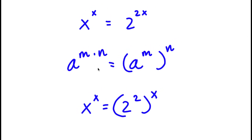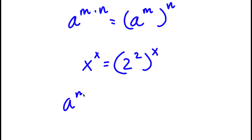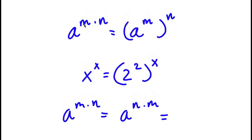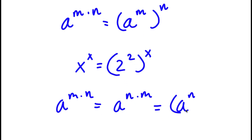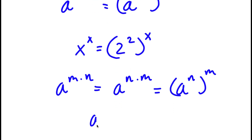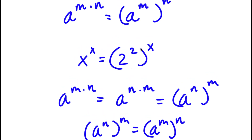Now, a to the power of m times n is also equal to a to the power of n times m — we could switch the order. So if a to the power of m times n equals a to the power of m to the power of n, then a to the power of n to the power of m equals a to the power of m to the power of n. So 2 to the power of 2 to the power of x is the same thing as 2 to the power of x to the power of 2.